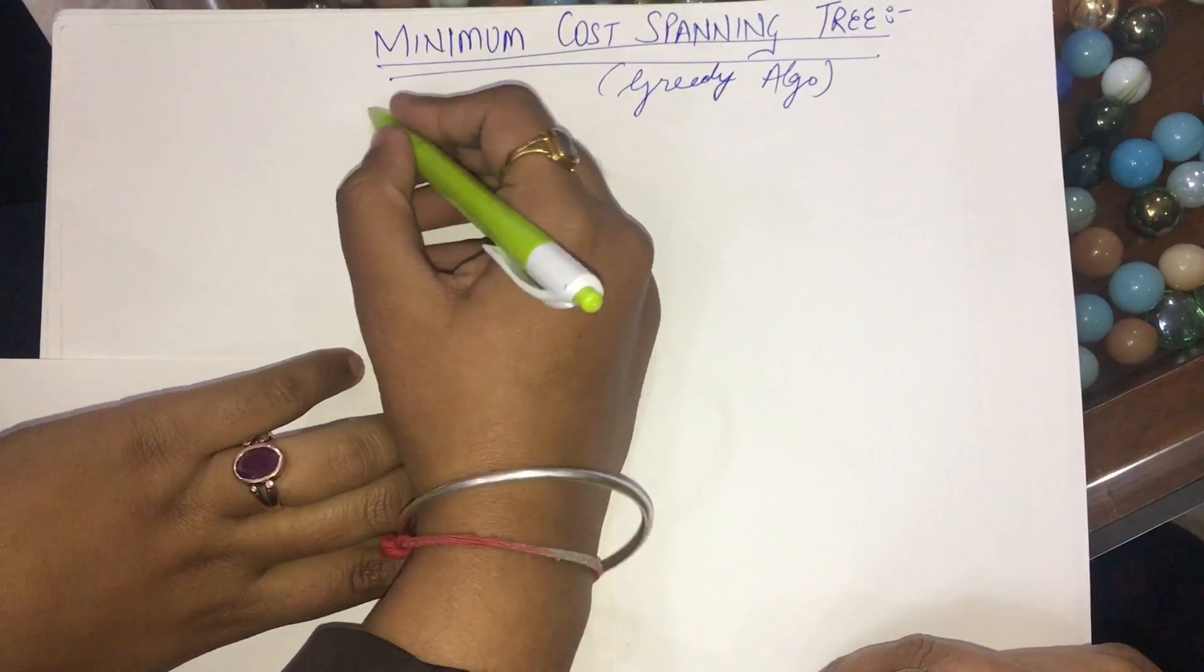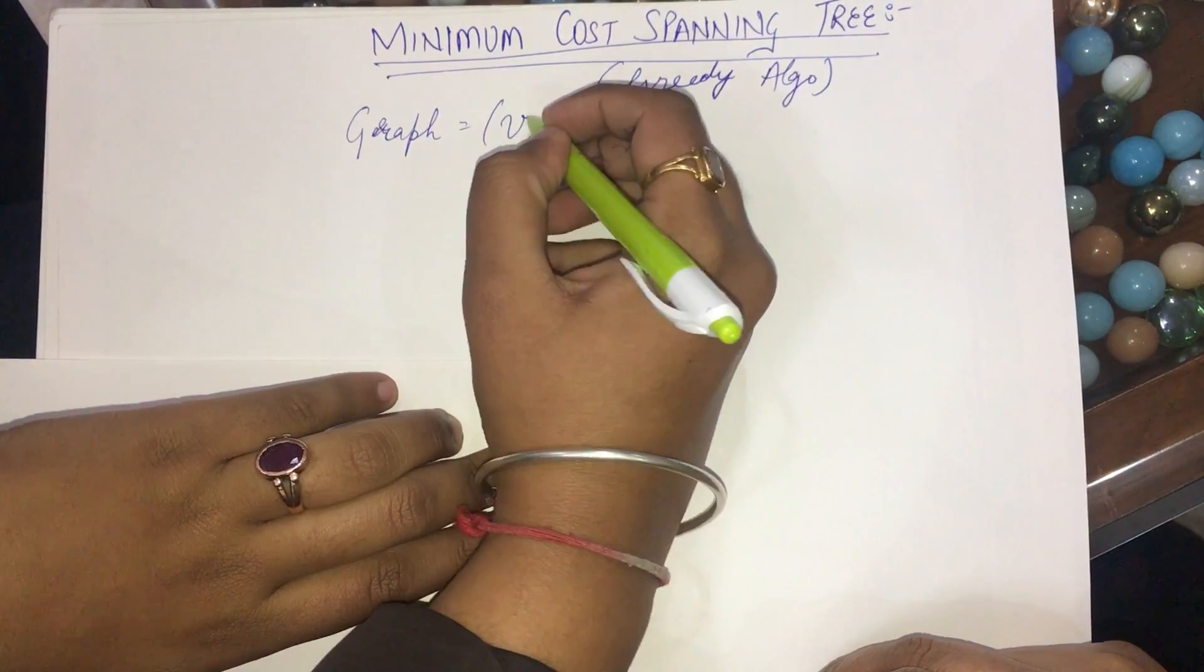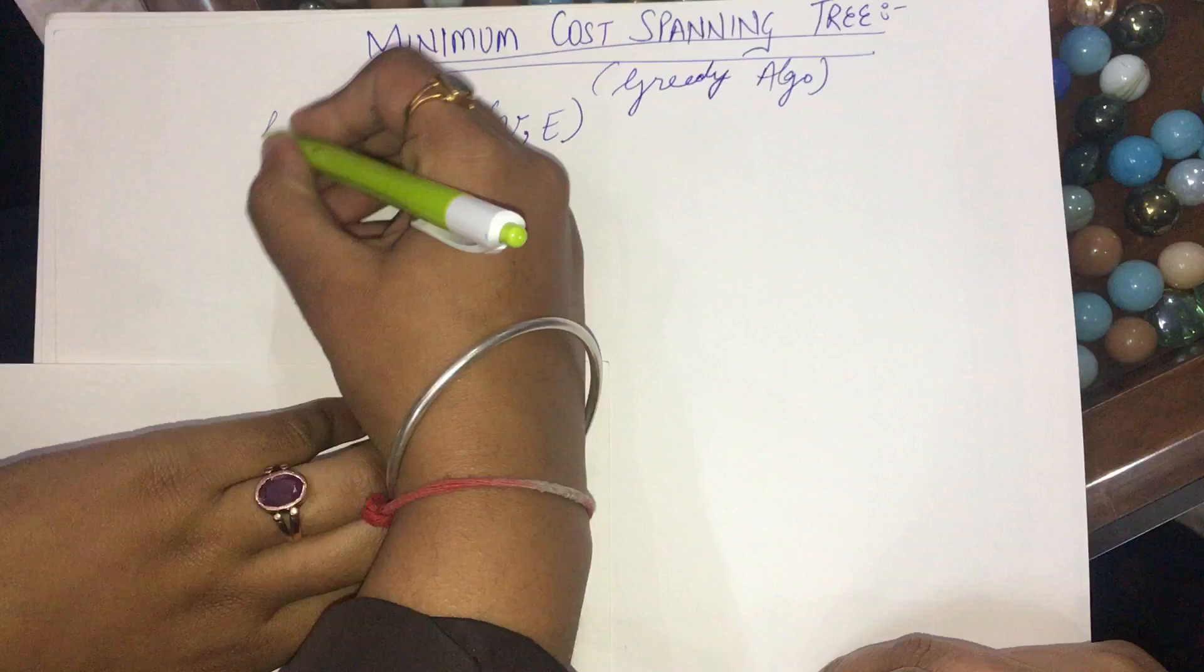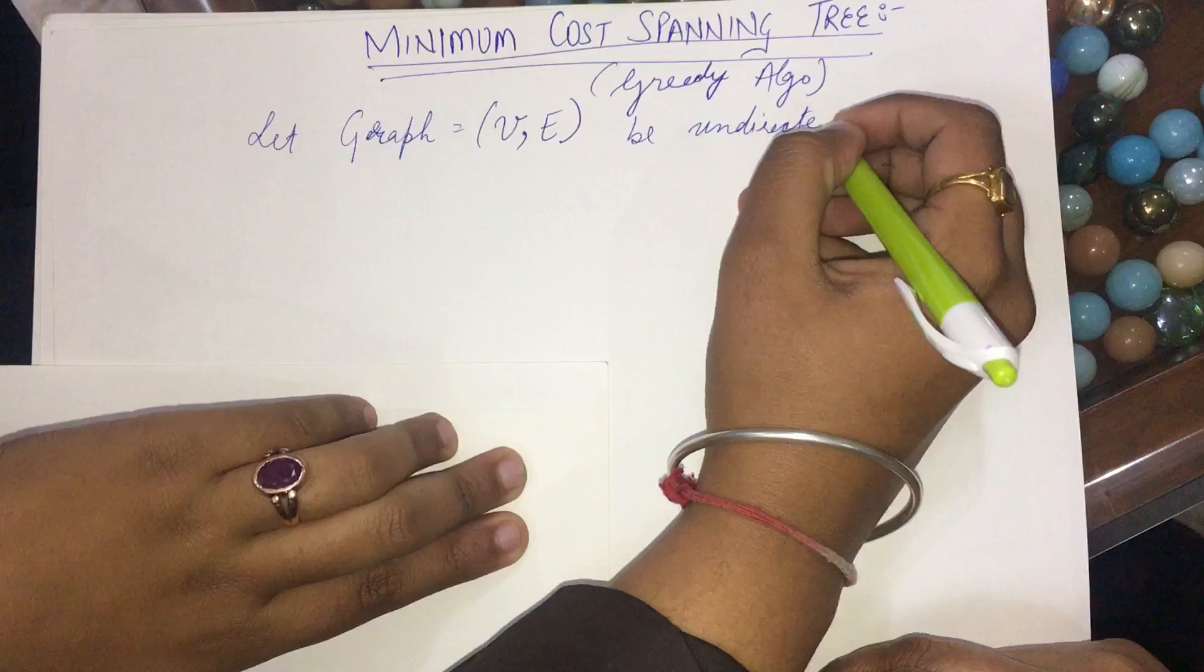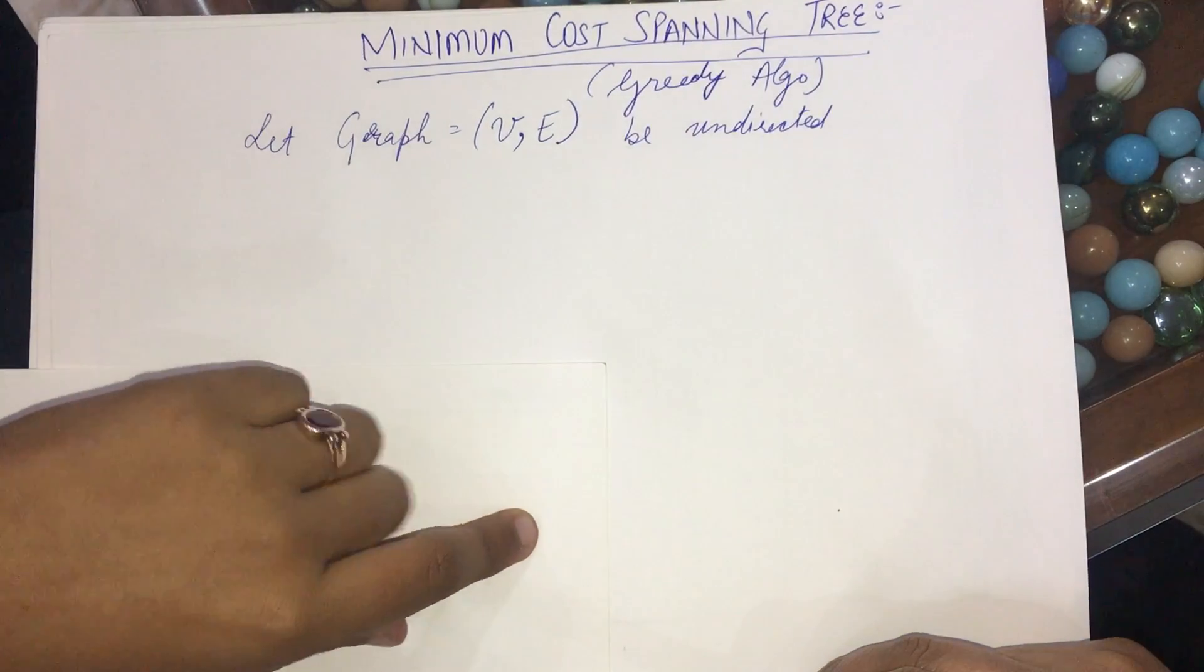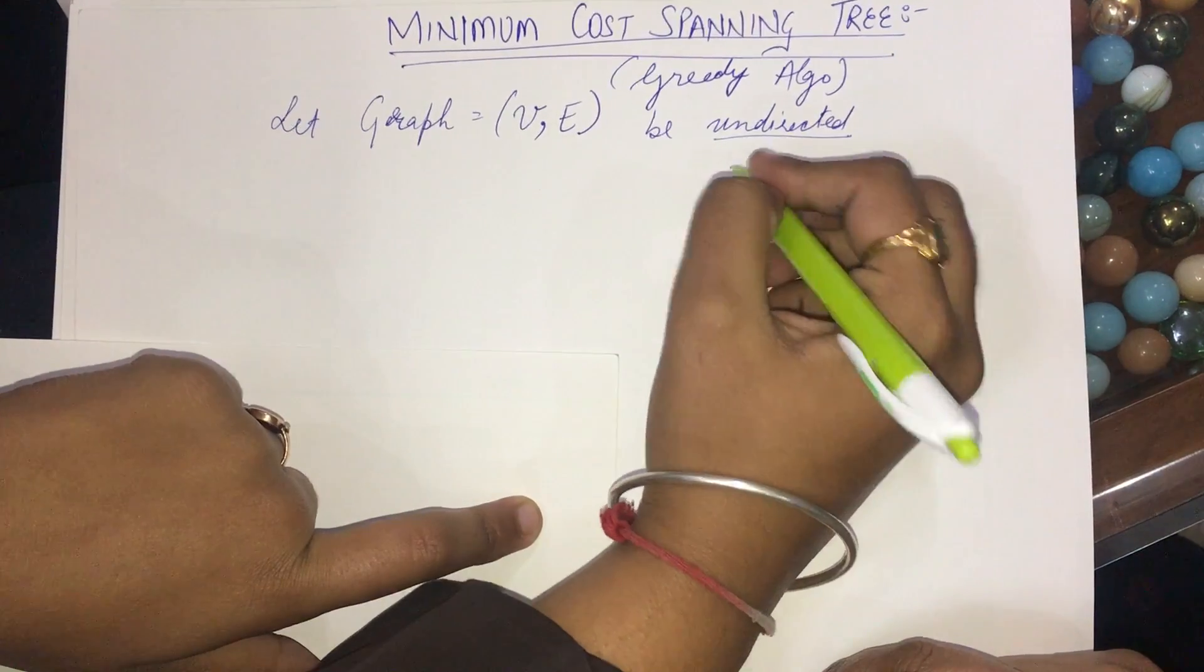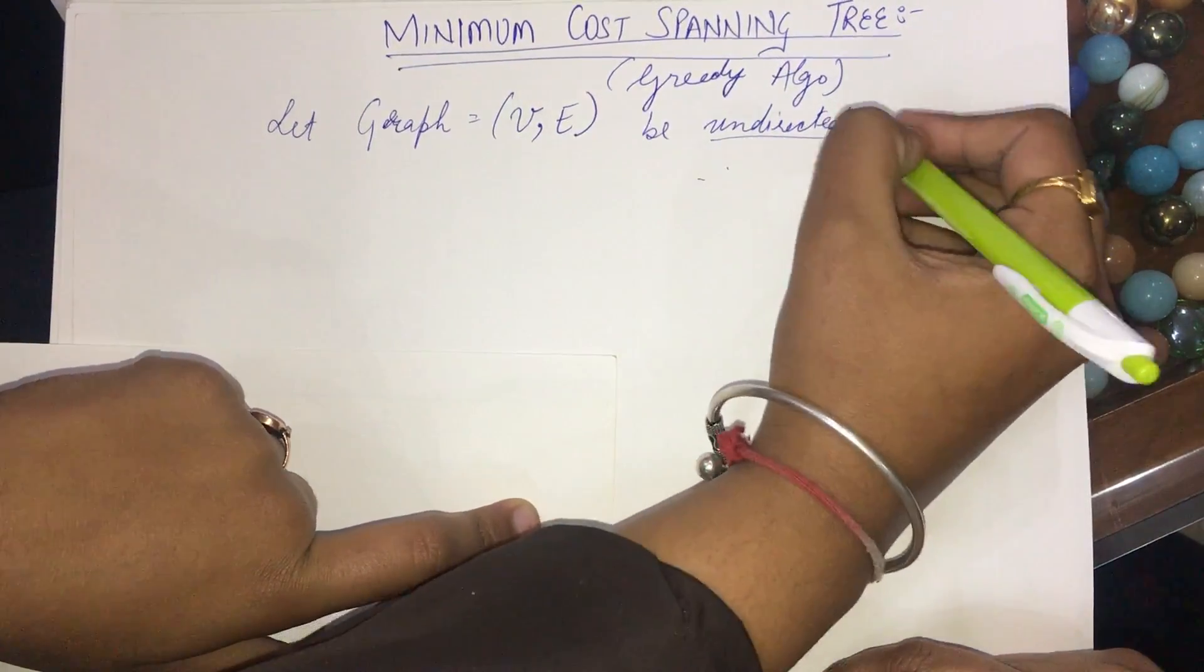So we have a graph. The graph has a set of vertices called V and a set of edges called E. Let this graph be undirected and connected. Connected means we can reach any of the vertices from a given vertex. We can reach all other vertices. Undirected means there are no directions. That is, if I go from A to B, I can also go from B to A along the same path.